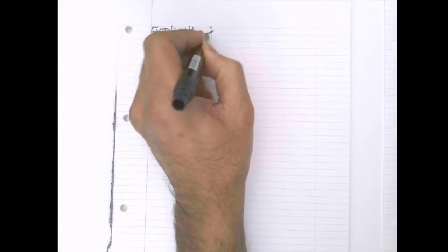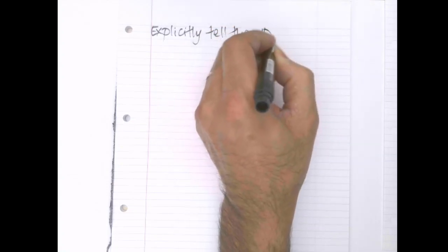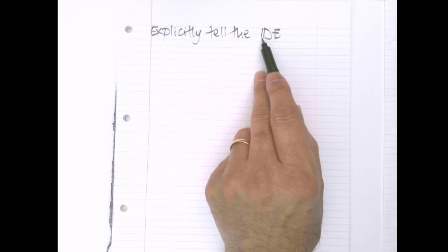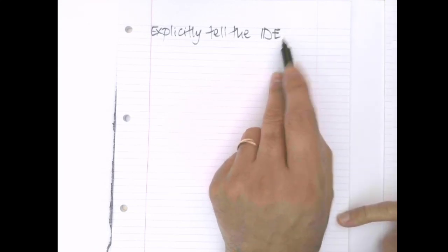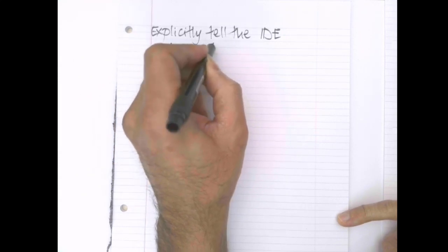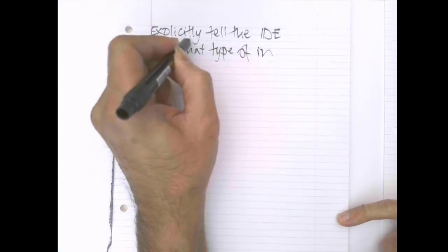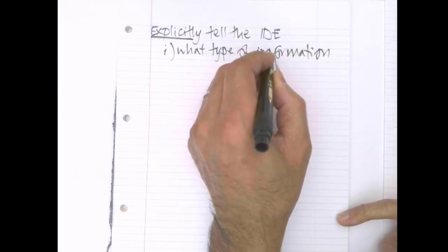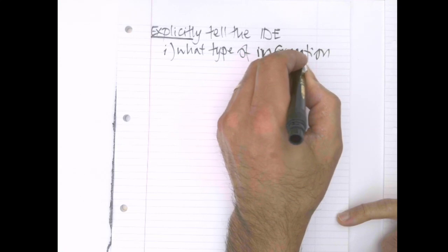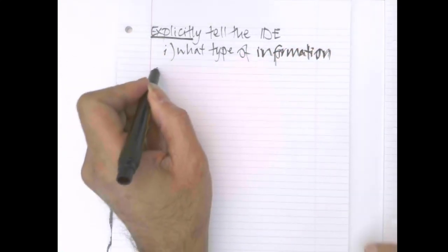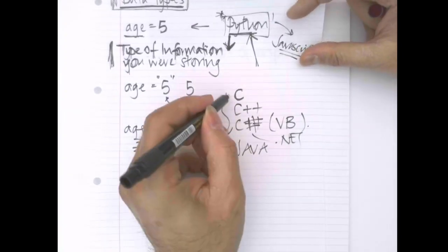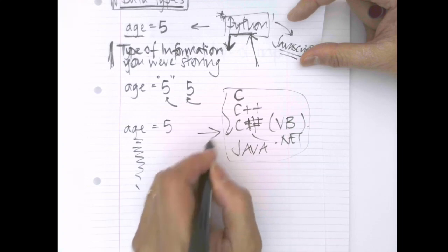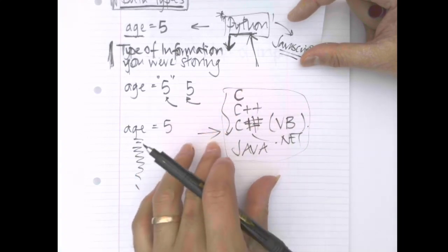So, the concept has two elements. You have to explicitly tell the environment. Rather than use the word environment, I'm going to use the three letters IDE, which is your development environment. You have to tell the IDE what type of information you are storing. You have to do this explicitly. You can't rely on the system itself knowing. The question for you is, why? Is this just a peculiarity of the languages that we mentioned a moment ago?